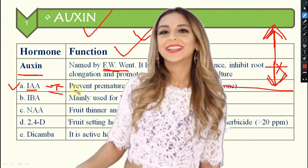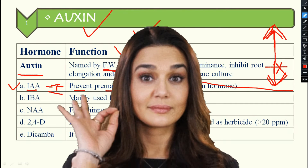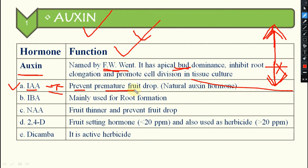IAA functions to prevent premature fruit drop. Sometimes fruits drop before maturity, so if you apply IAA, premature fruit drop will be stopped. This is a management practice. IAA is also known as the natural auxin hormone.